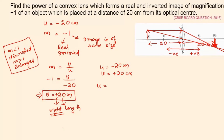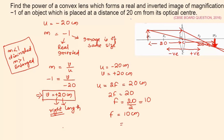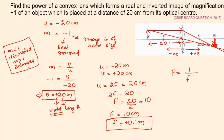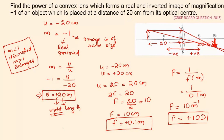From this we get that the object is situated at 2f, so the object distance equals 2f equals 20 centimeter, which means f equals 20 by 2, that is 10 centimeter, or 0.1 meter. The focal length is positive because we know a convex lens has a positive focal length. We express focal length in meters because the formula for power is the reciprocal of focal length in meters. So power P equals 1 by 0.1 meter, which gives P equals plus 10 diopters. This is the answer.